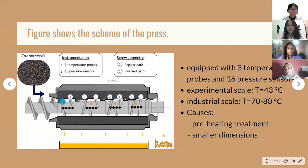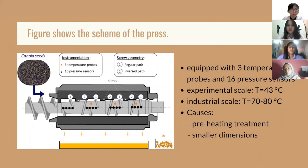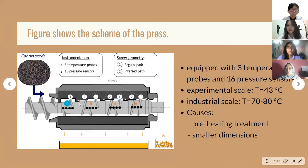The press was equipped with three temperature probes and 16 pressure sensors. The temperature was observed at around 43 degrees Celsius. However, the temperature observed at industrial scale is around 70 to 80 degrees Celsius, which is different from the result recorded in the lab. This may be due to seeds undergoing preheating treatment before pressing. Also, the press used in this experiment has relatively smaller dimensions and can enhance its capacity to cool by natural convection with surrounding air.